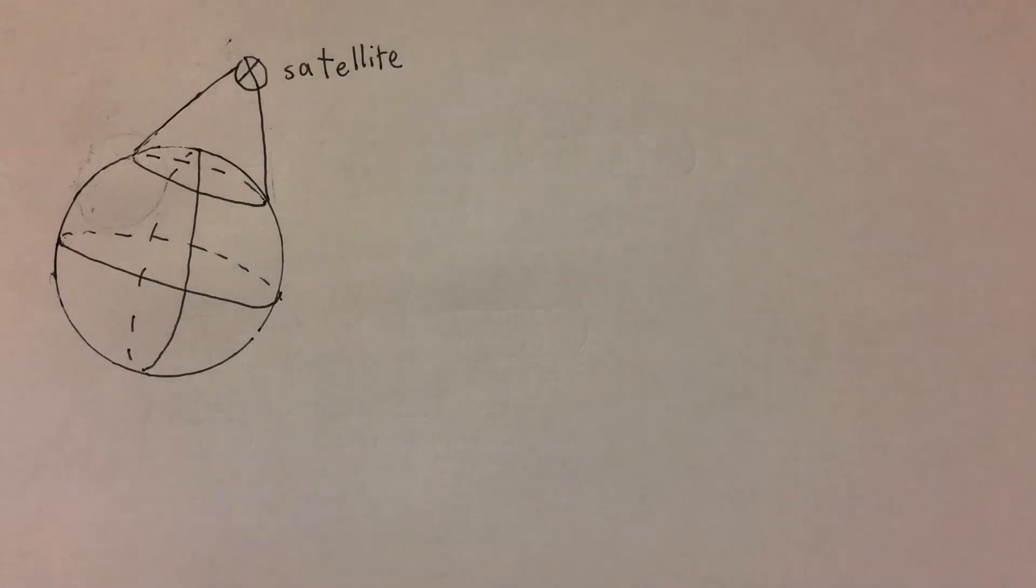Let's redraw the diagram as a cross-section of what the satellite can see so that we can more easily identify the relationship between these variables.